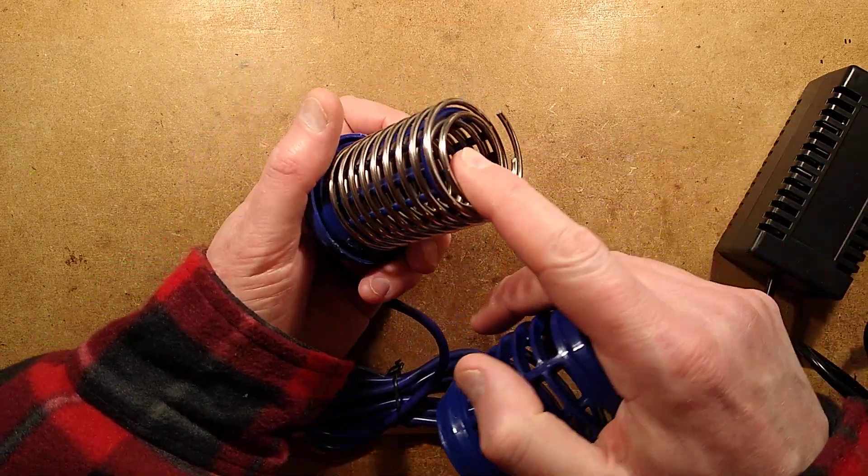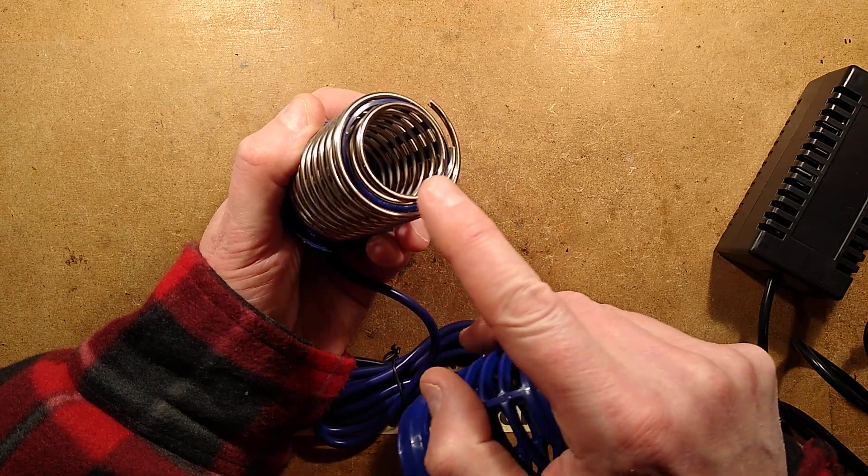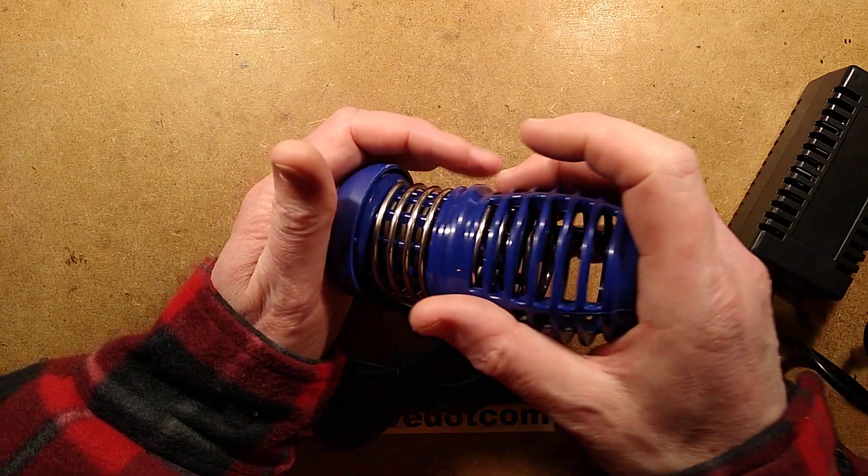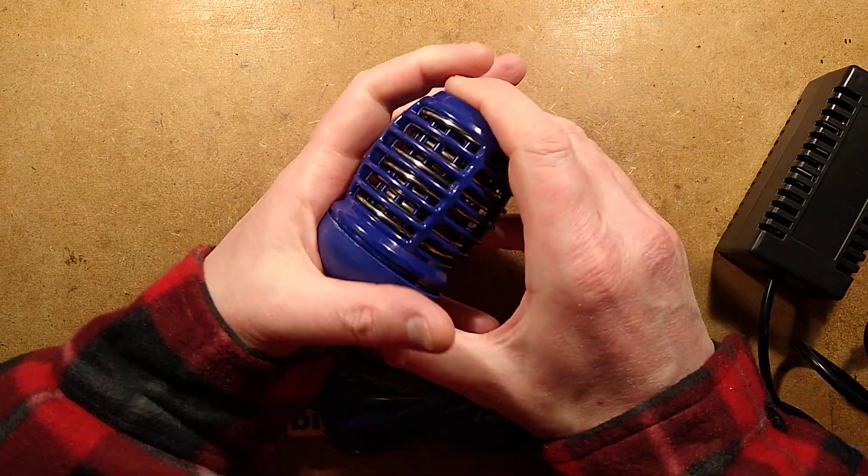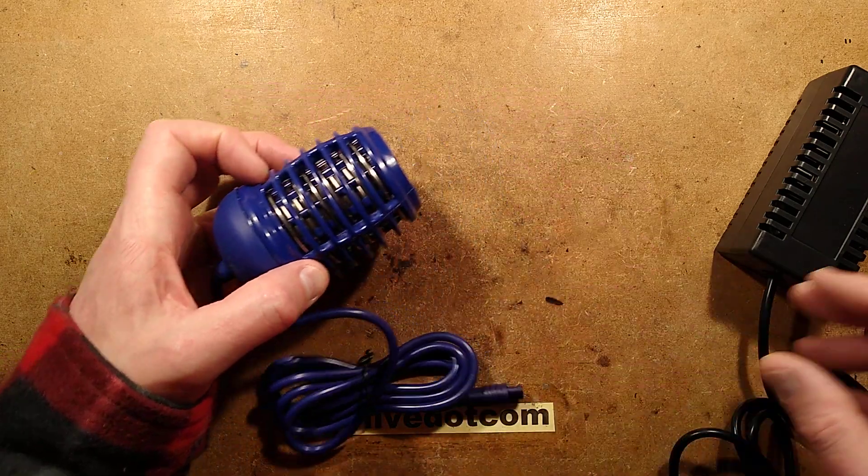Let's put this back together. Now we've seen this as just basically two big inner and outer springs. One for positive, one for negative. These electrodes have a finite life. You get to use them X amount of times and then basically the metal's all dissolved away.